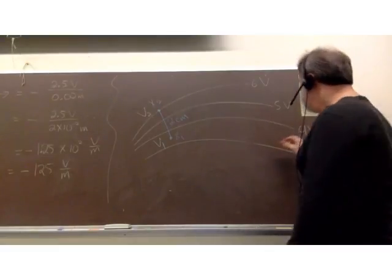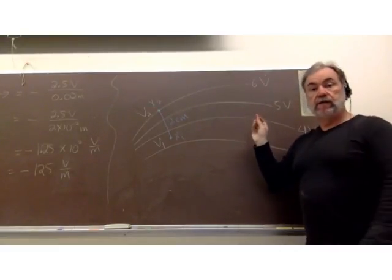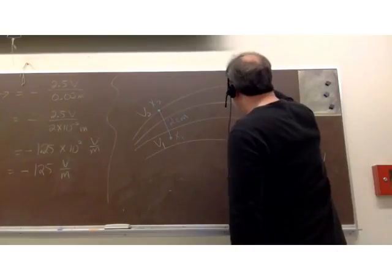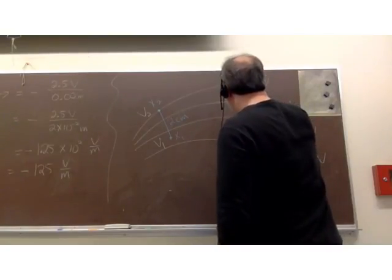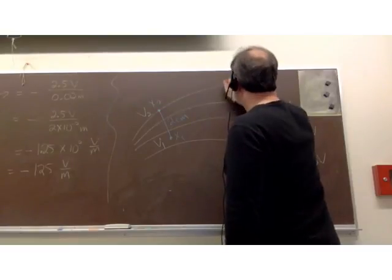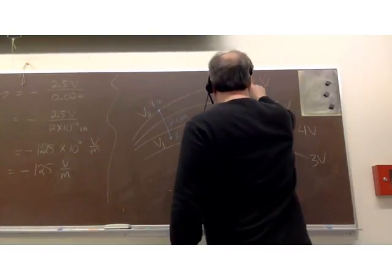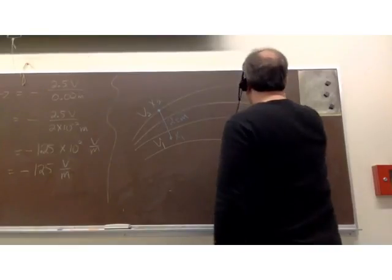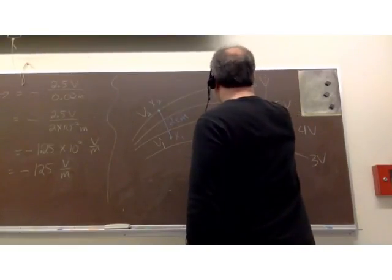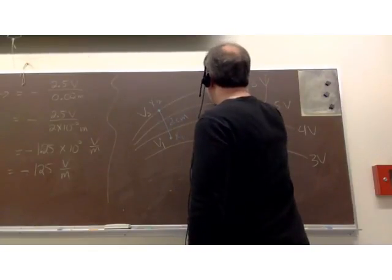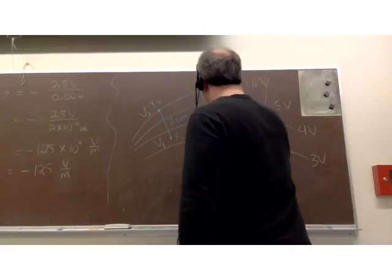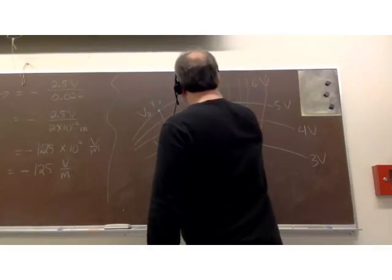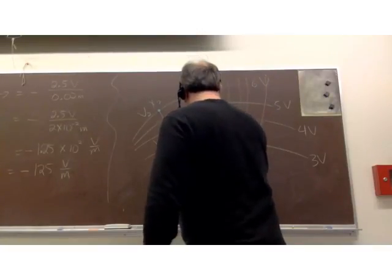I will obey the rule: the electric field vectors need to be everywhere perpendicular to the equipotential lines. I'm drawing them perpendicular to the lines of equal potential, being careful to get these field vectors everywhere perpendicular to those lines. These are all electric field vectors — they don't look like vectors yet because I haven't put the arrowheads on them.